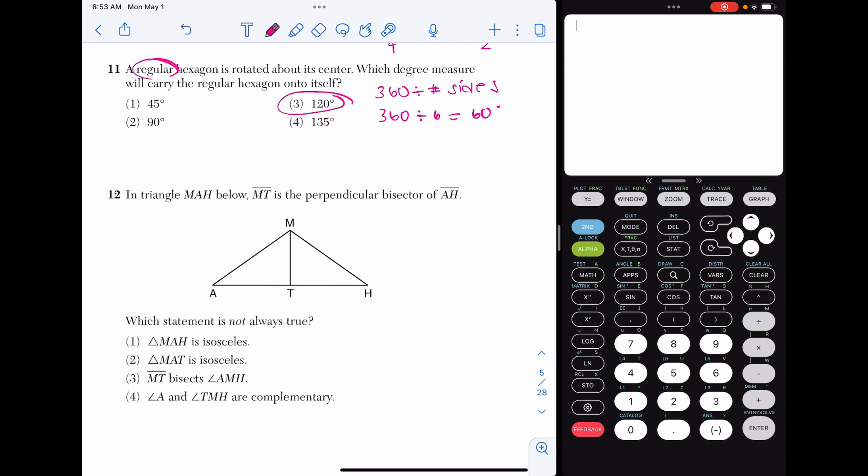Number 12. In triangle MAH below, MT is the perpendicular bisector of AH. So perpendicular means I have right angles. Bisector means that is split into two congruent parts. Which statement is not always true? One thing I just want to point out too before I actually read these answer choices is that we know MT is congruent to itself by the reflexive property. So I basically know that triangle MAT is congruent to triangle MHT. Let's keep that in mind before we read through our answer choices.